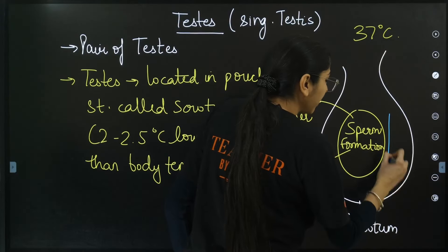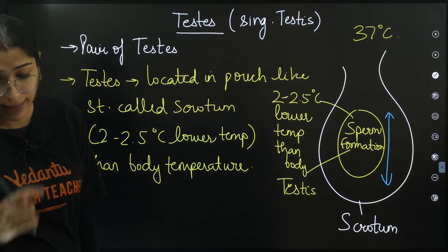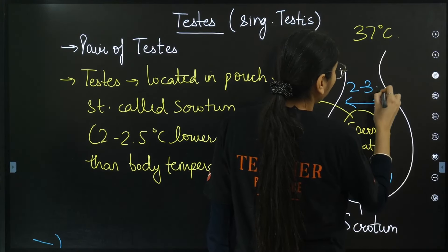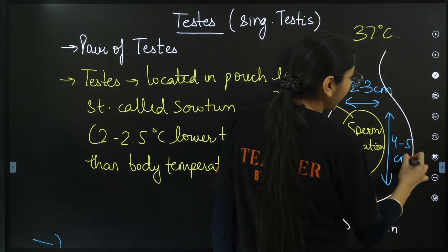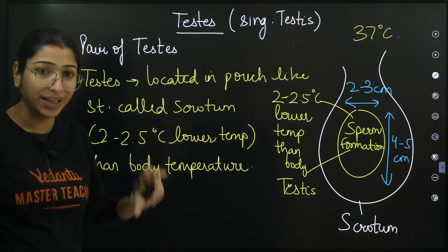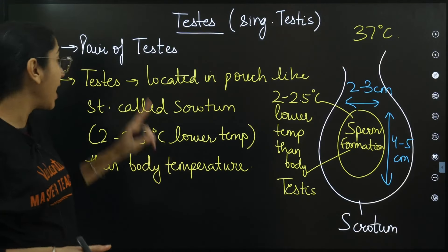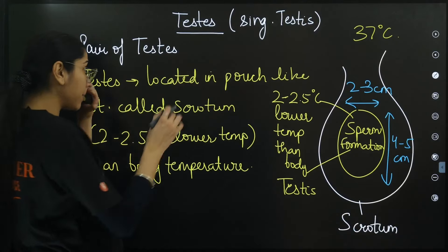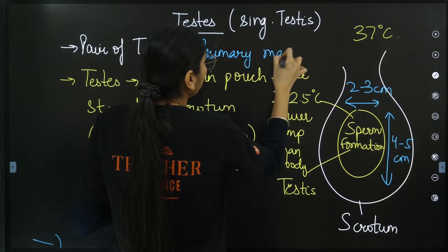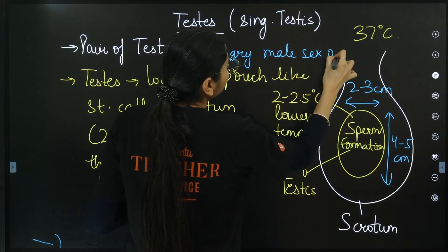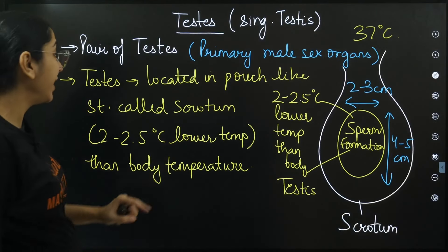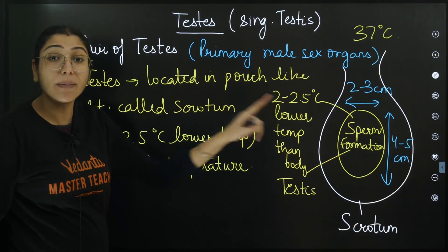The dimensions of the testis are approximately 4 to 5 centimeters in length and 2 to 3 centimeters wide. They are present in pairs and are the primary male sex organs.